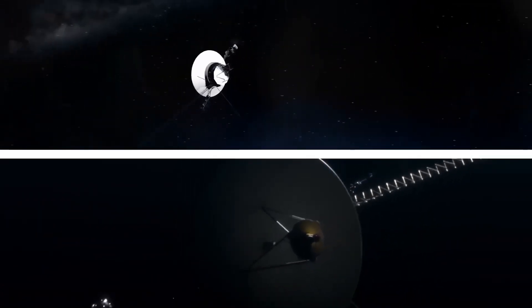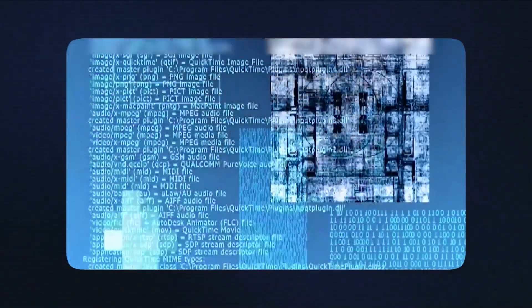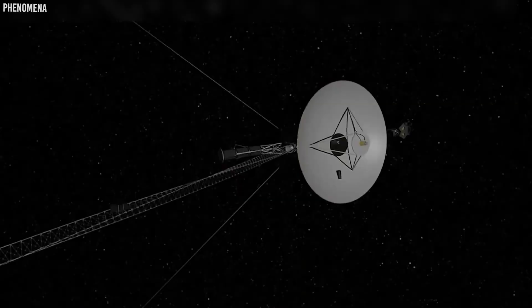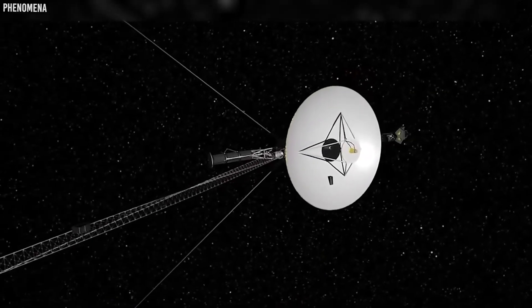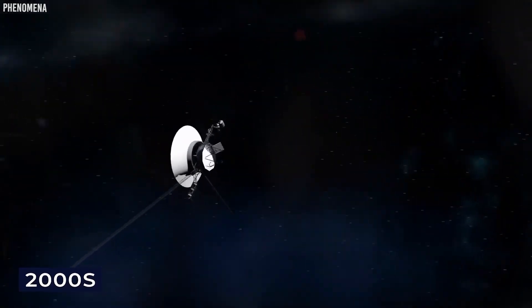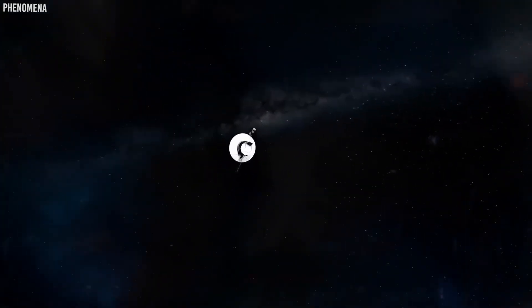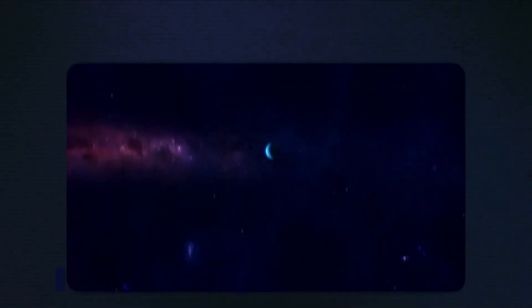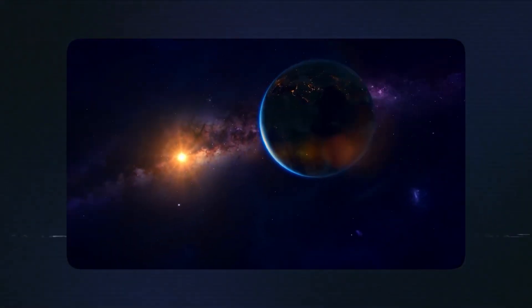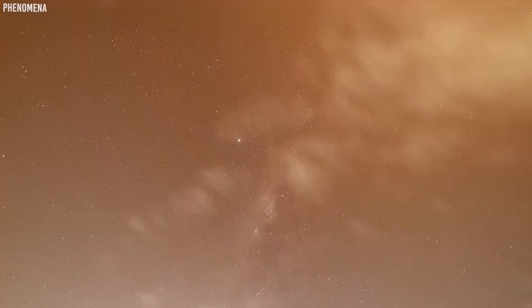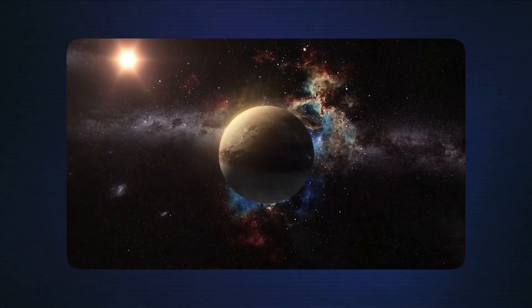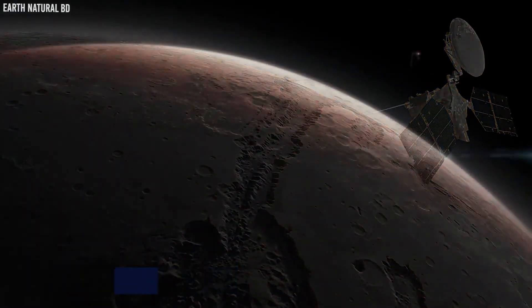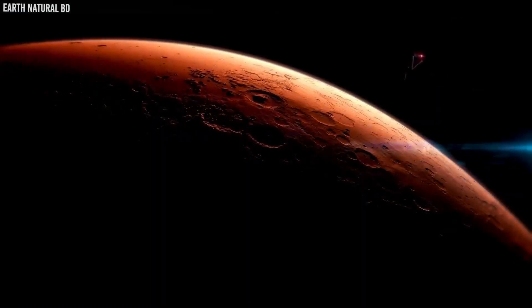As Voyager 1 left Saturn behind, it turned its camera back toward the planets for one last look. In February 1990, at Carl Sagan's suggestion, it took a series of pictures that included what became known as the Pale Blue Dot image—Earth, a tiny blue pixel in a sunbeam, seen from 3.7 billion miles away. Sagan's reflection on this image would become one of the most profound statements about humanity's place in the cosmos ever written. And then Voyager 1 fell silent, at least visually. NASA turned off the cameras to save power, and the spacecraft sailed into the darkness, blind but still sensing, still listening.